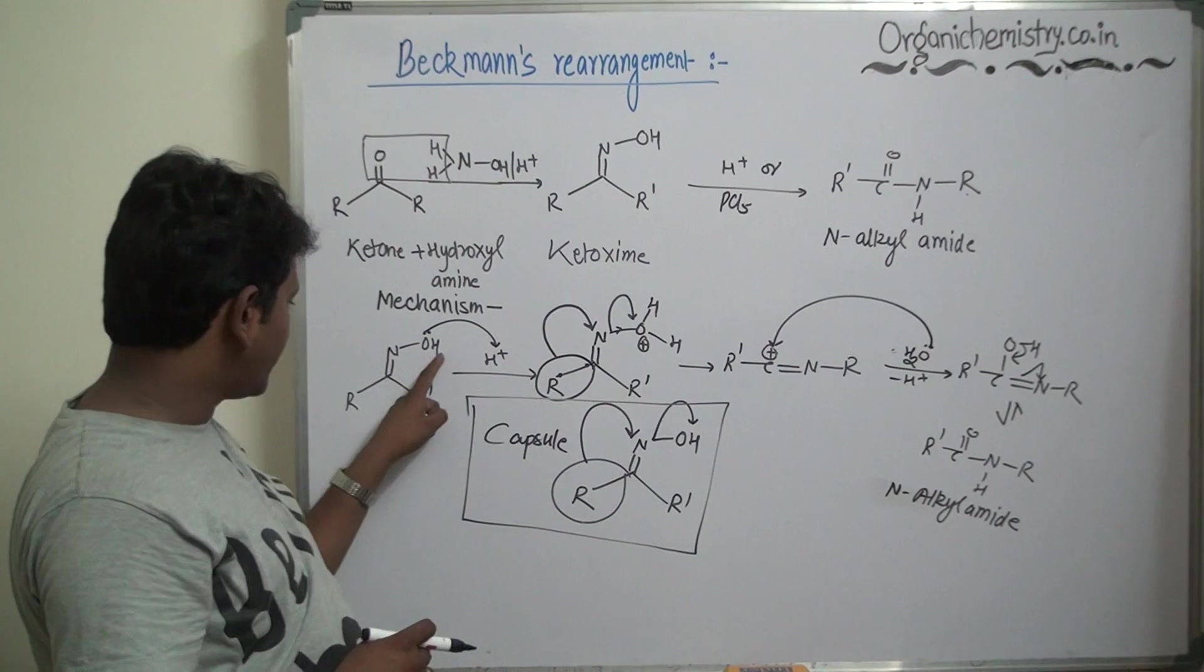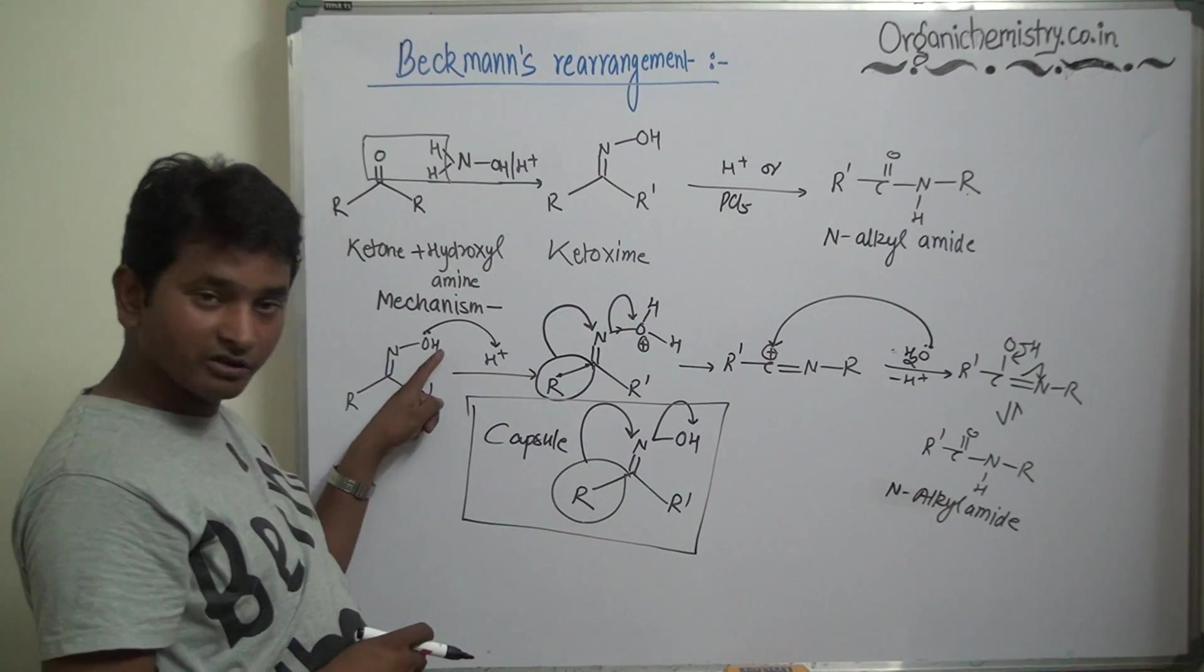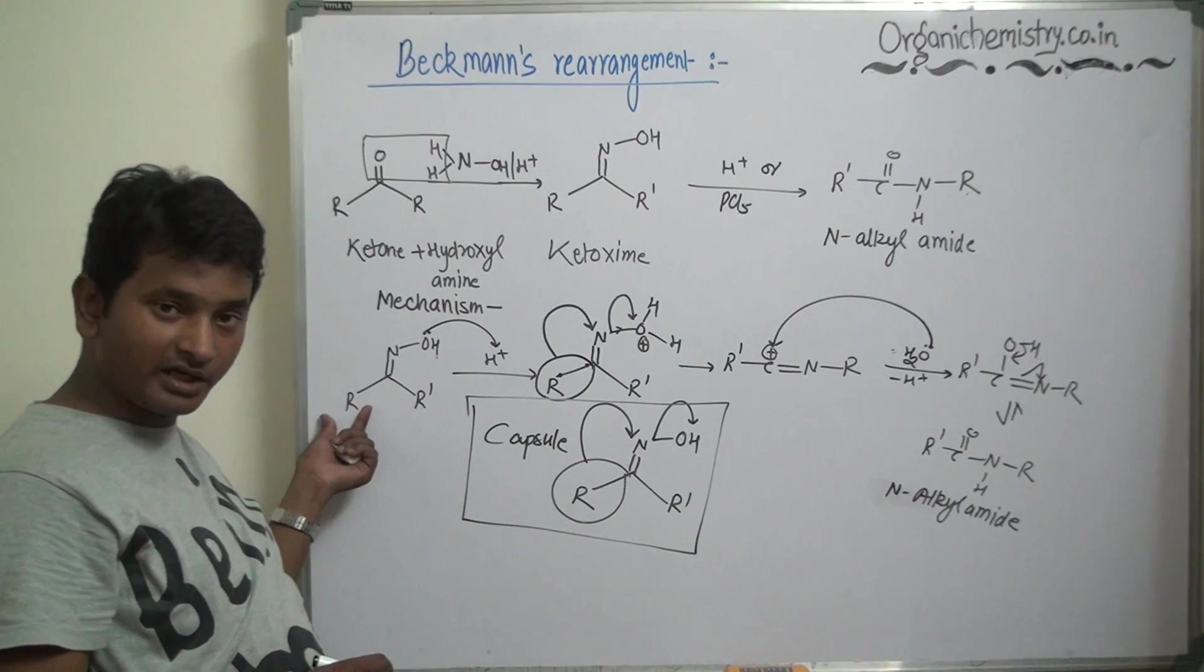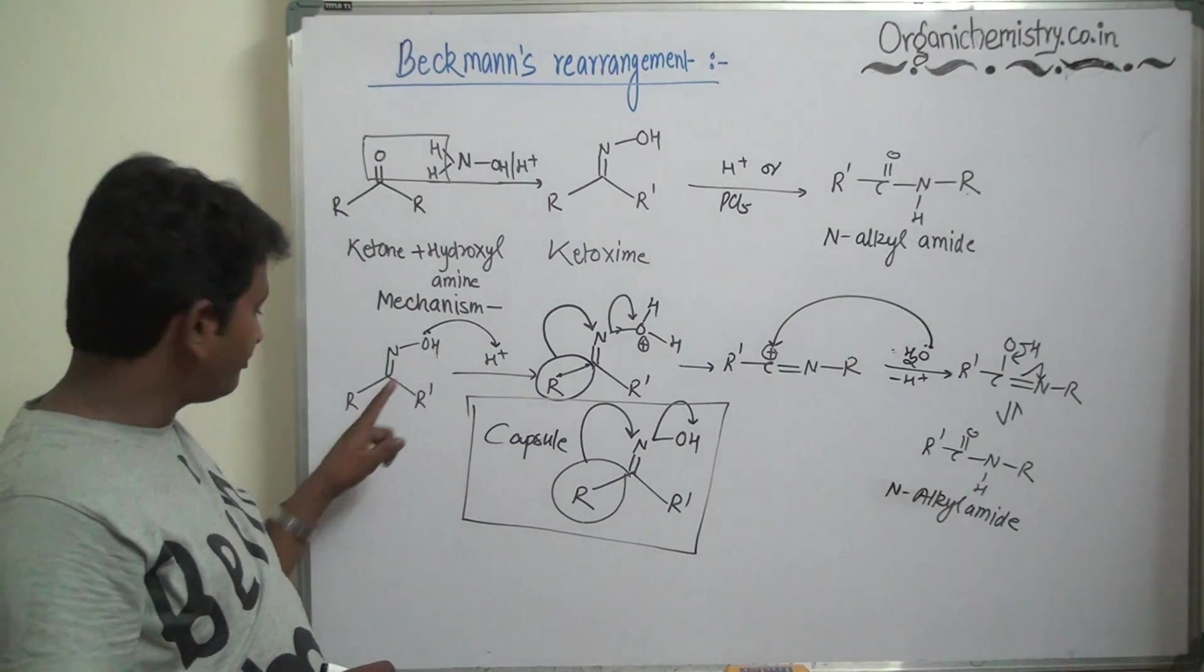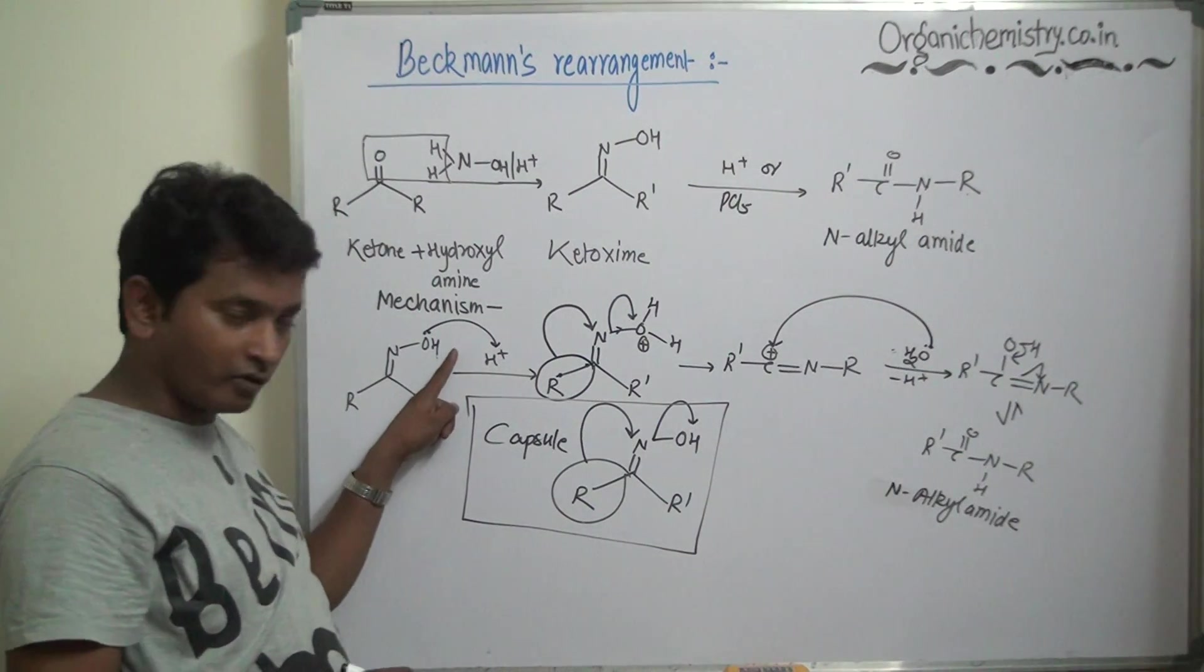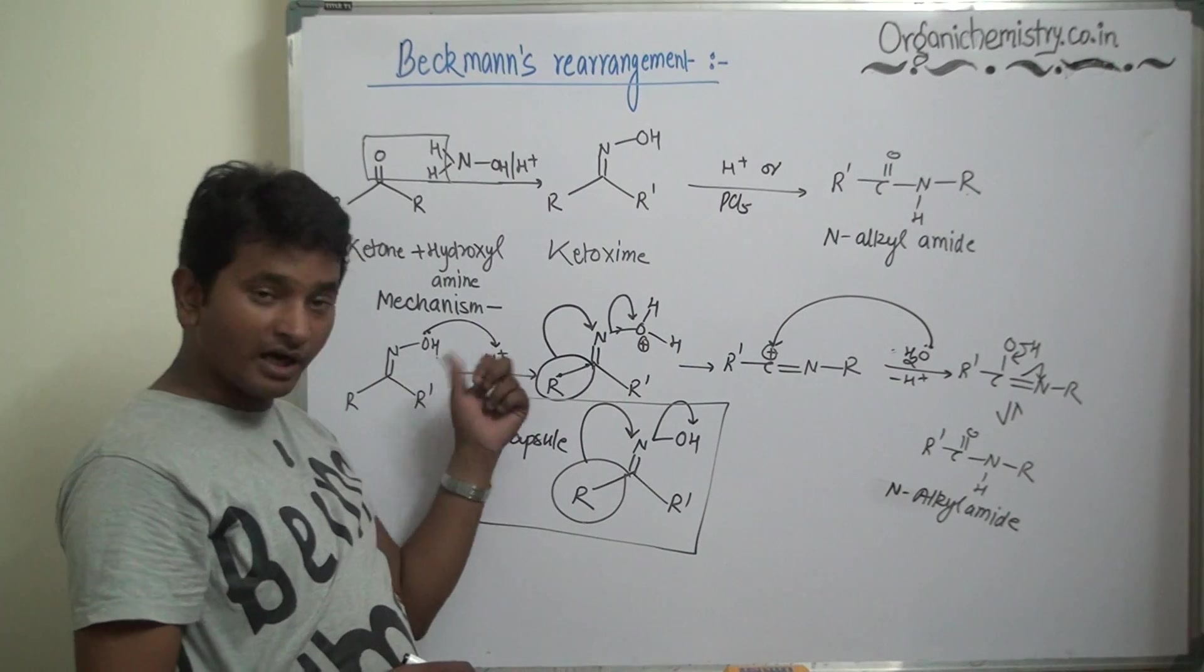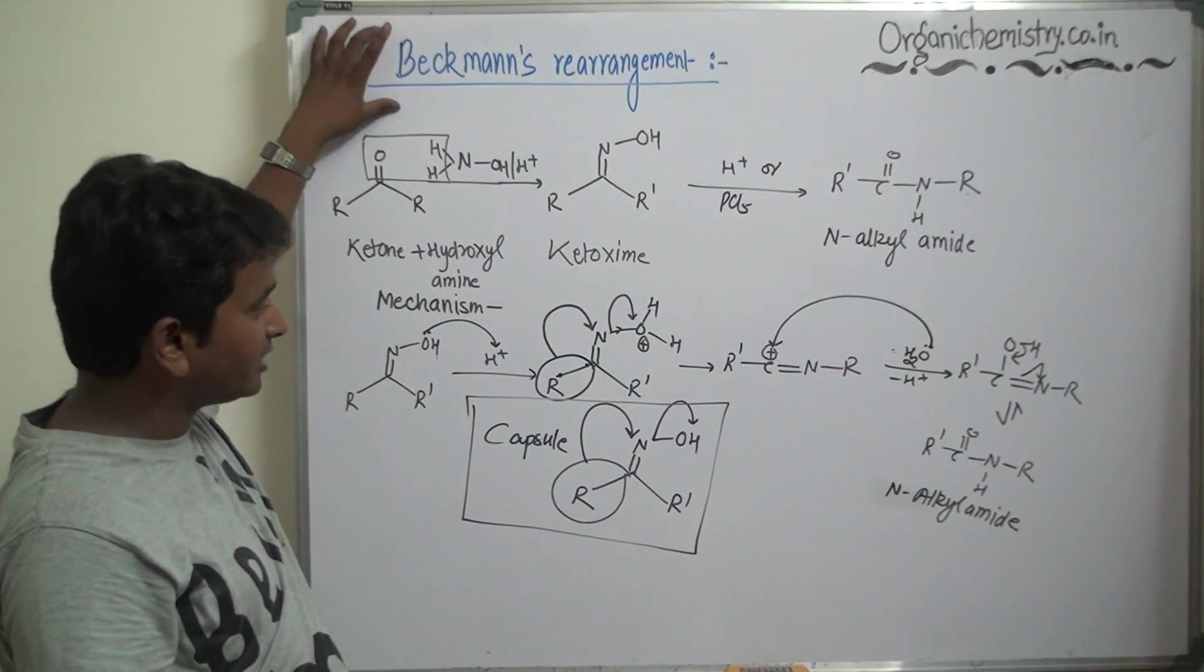Important part is anti movement. That is, the alkyl group which is anti to the OH will migrate from this position to this position. No matter this one is alkyl group, no matter this one is aryl group. If it is Ph then Ph will move, if it is CH3 then CH3 will move, if it is ethyl then ethyl will move. No matter it is aryl or alkyl, it is important that anti-migration will be taken place in the Beckmann's rearrangement.